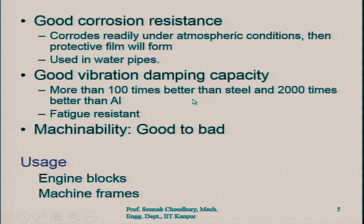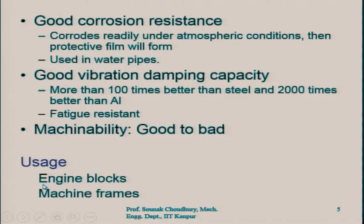Cast iron has good vibration damping capacity — more than 100 times better than steel and 2000 times better than aluminium in terms of vibration damping. It also has good fatigue resistance — it can withstand repetitive loads for a longer time than comparative materials. Machinability is good to bad in the sense that it is a brittle, hard material and while machining it will have discontinuous chips, so machinability is not very good but not so bad. Cast iron is widely used for making engine blocks or machine frames.